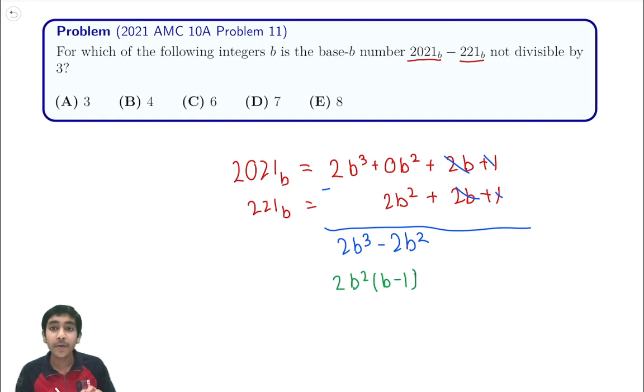So instead, we ask the question: when will it be divisible by 3? In other words, when will it be 0 mod 3?